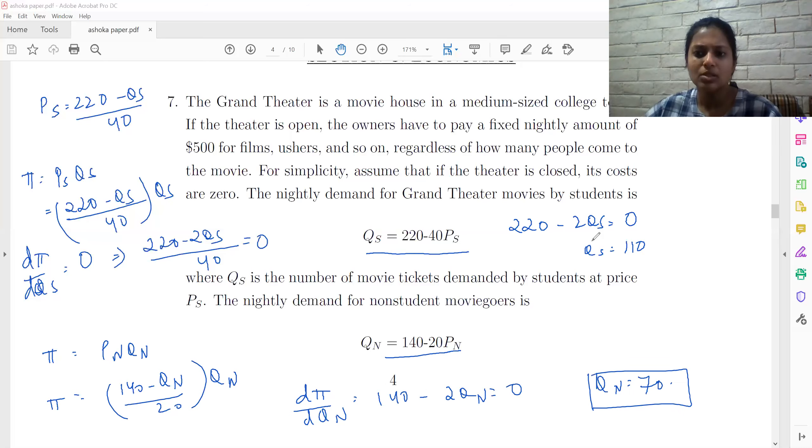Now, the only thing that we need to check is the prices. So PS is 220 minus 110 by 40. So that is going to be 110 by 40, which is going to be 11 by 4, which is going to be something like 5.5 over 2.